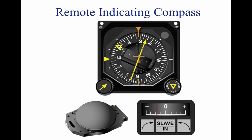A separate unit, the magnetic slaving transmitter, is mounted remotely, usually in a wing tip, to eliminate the possibility of magnetic interference. It contains the flux valve, which is the direction sensing device of the system. A concentration of lines of magnetic force, after being amplified, becomes a signal relayed to the heading indicator unit, which is also remotely mounted. This signal operates a torque motor in the heading indicator unit that processes the gyro unit until it is aligned with the transmitter signal. The magnetic slaving transmitter is connected electrically to the HSI.